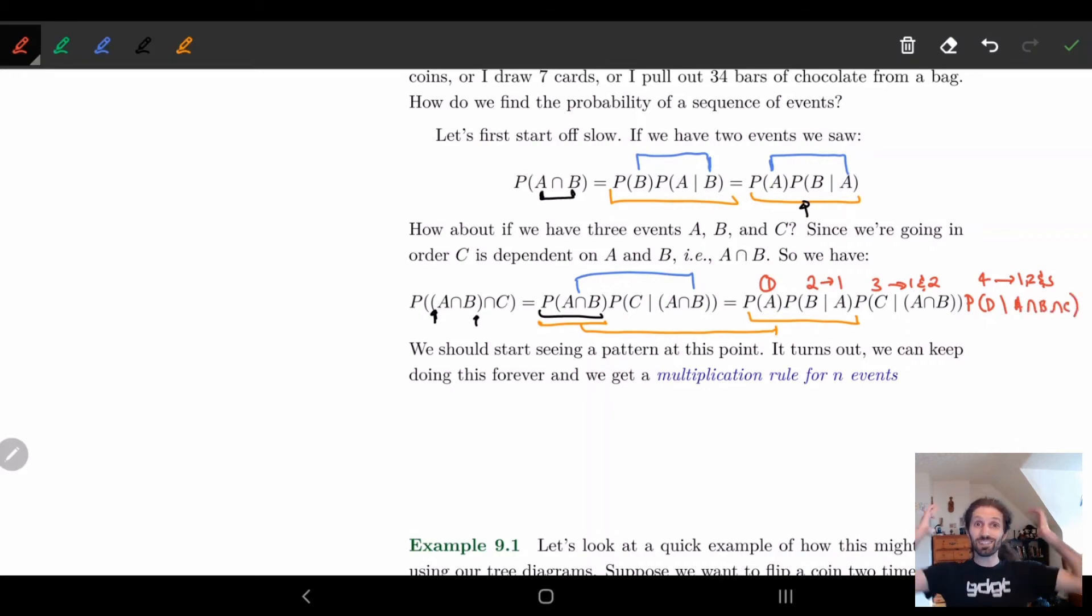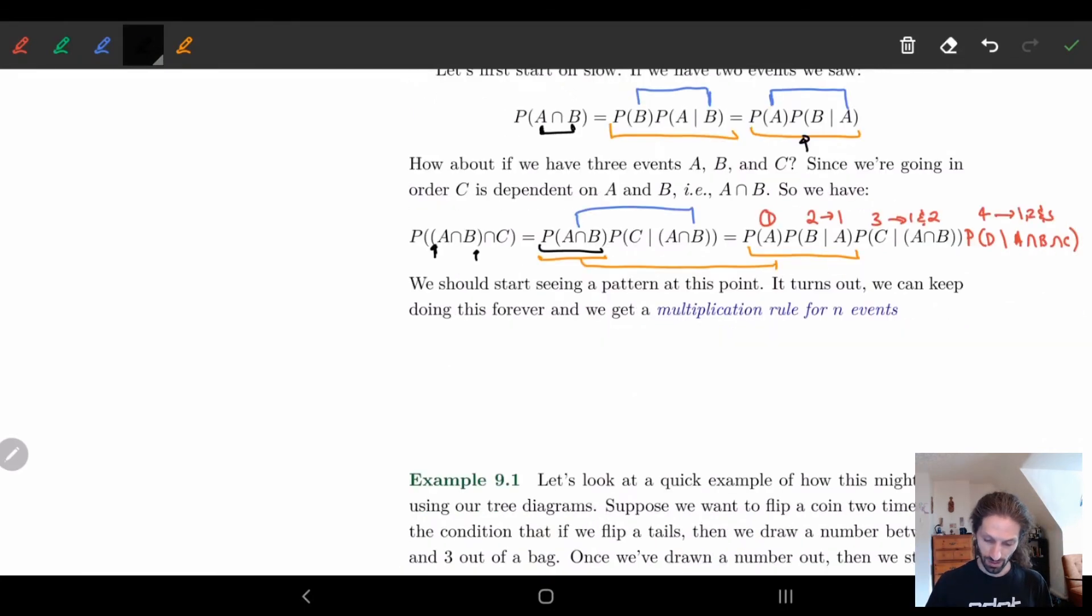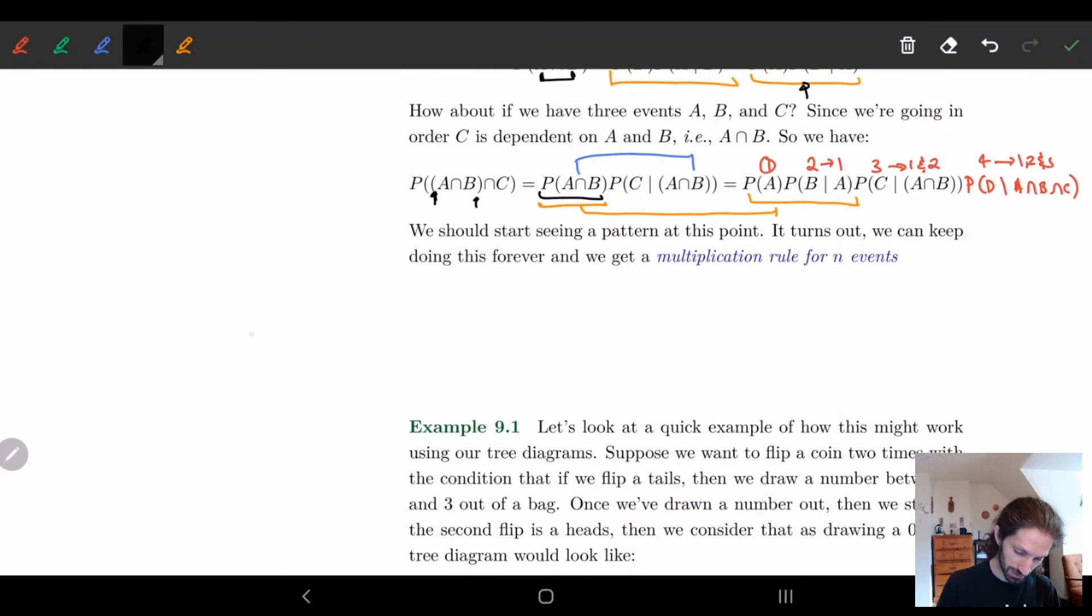So we would probably have the probability of D given A and B and C. And actually this turns out to be right. Like bam, it works out. So this is the multiplication rule for n different events.